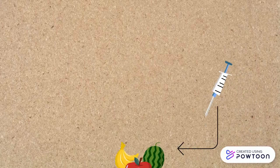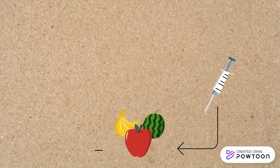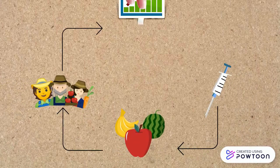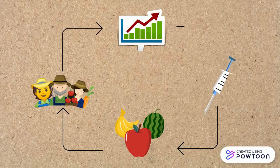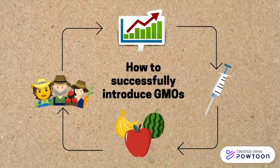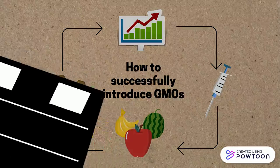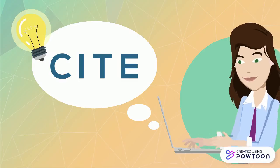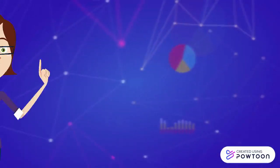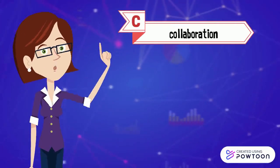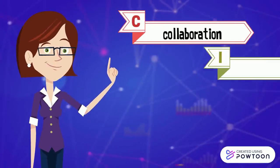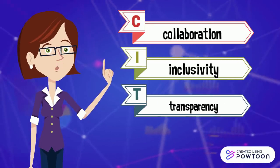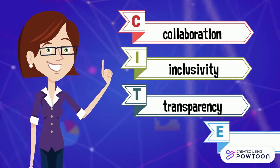With these examples in consideration, we now look into the possible strategies on how to successfully introduce GMOs. For wider acceptability, we should remember CITE, which stands for C — Collaboration, I — Inclusivity, T — Transparency, and E — Education.